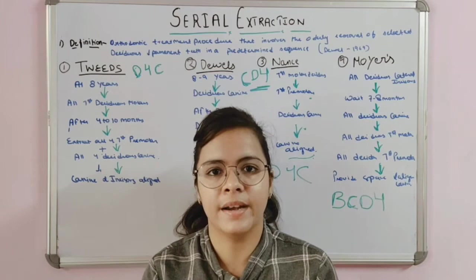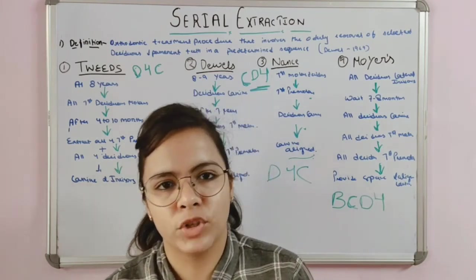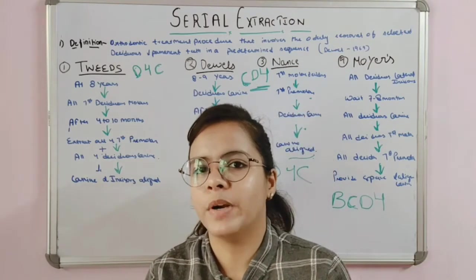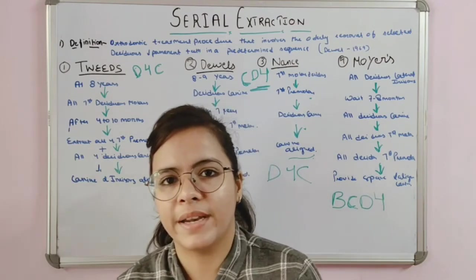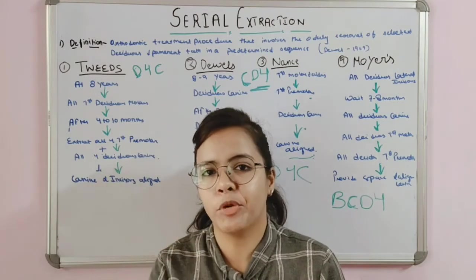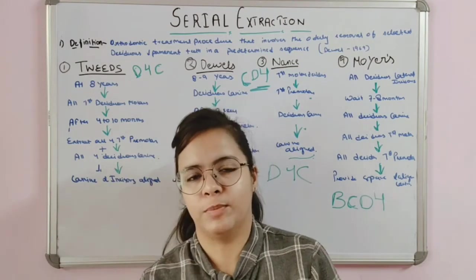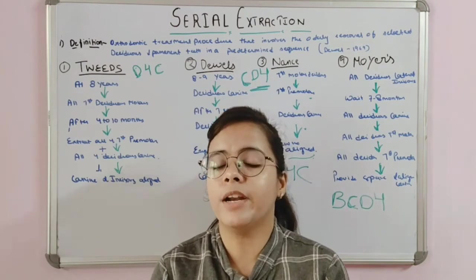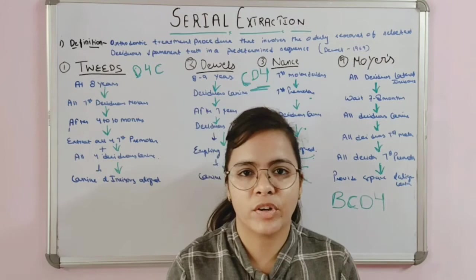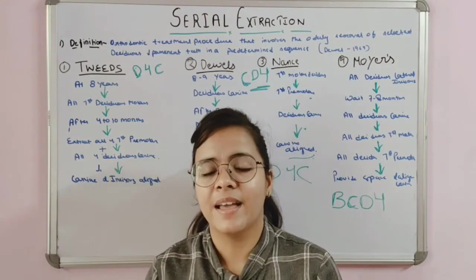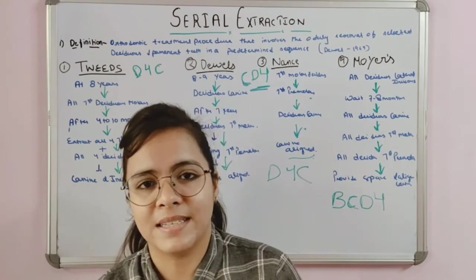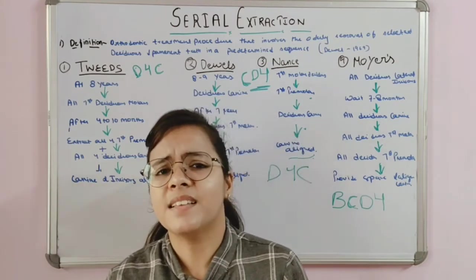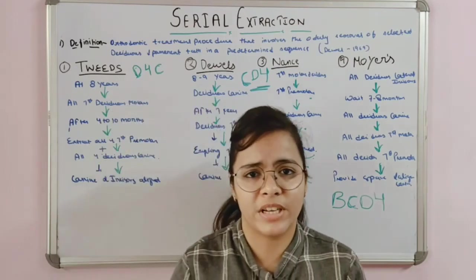The first limitation is the time lag between extraction of primary deciduous molars and eruption of premolars. During this gap, the tongue can thrust into the extraction space, leading to development of tongue thrust, and the premolars may fail to erupt to the occlusal level. The second and most serious limitation is a decreased tendency for the bite to close, seen in some cases following deciduous tooth extraction.